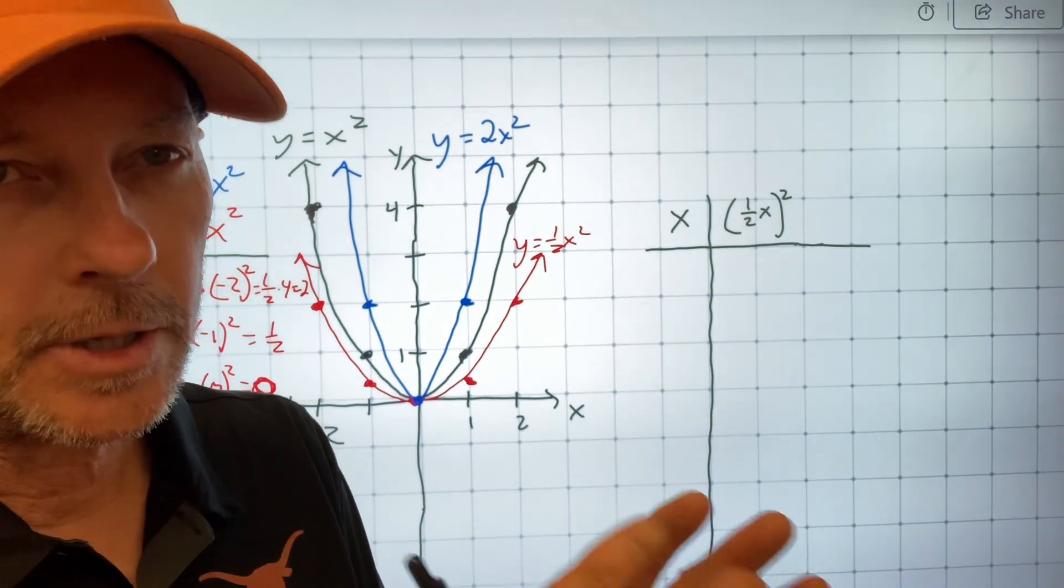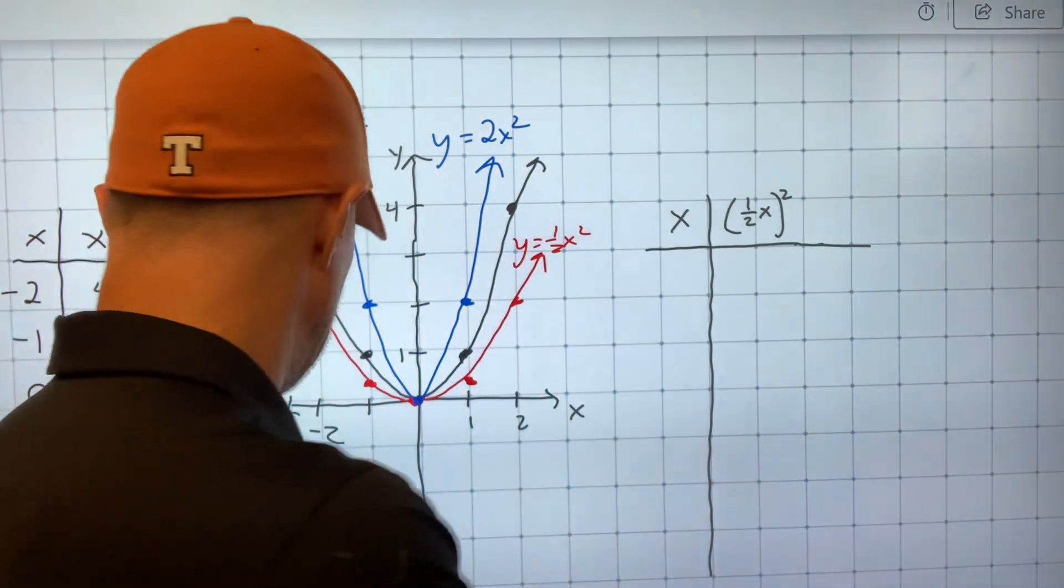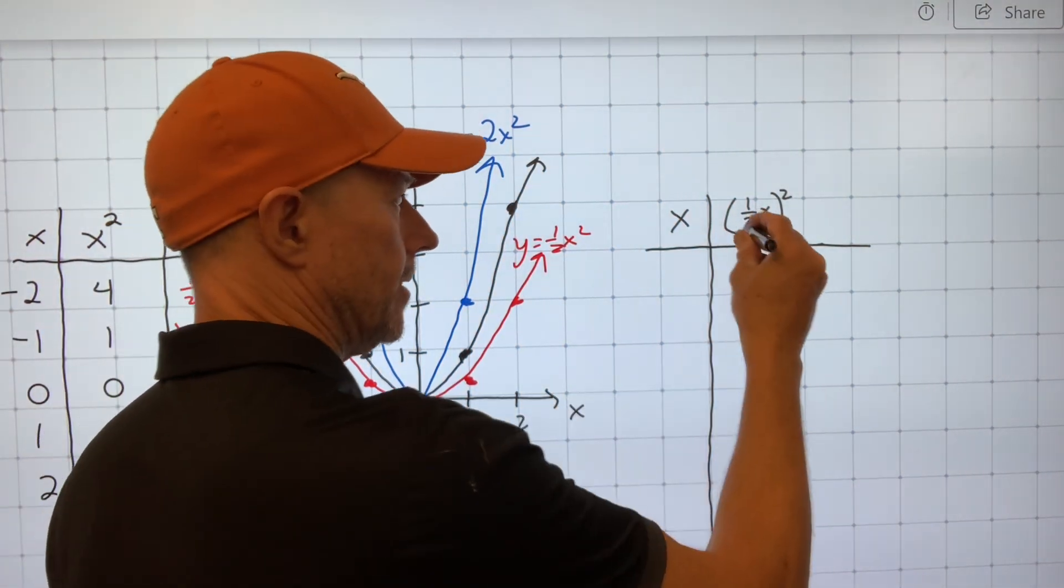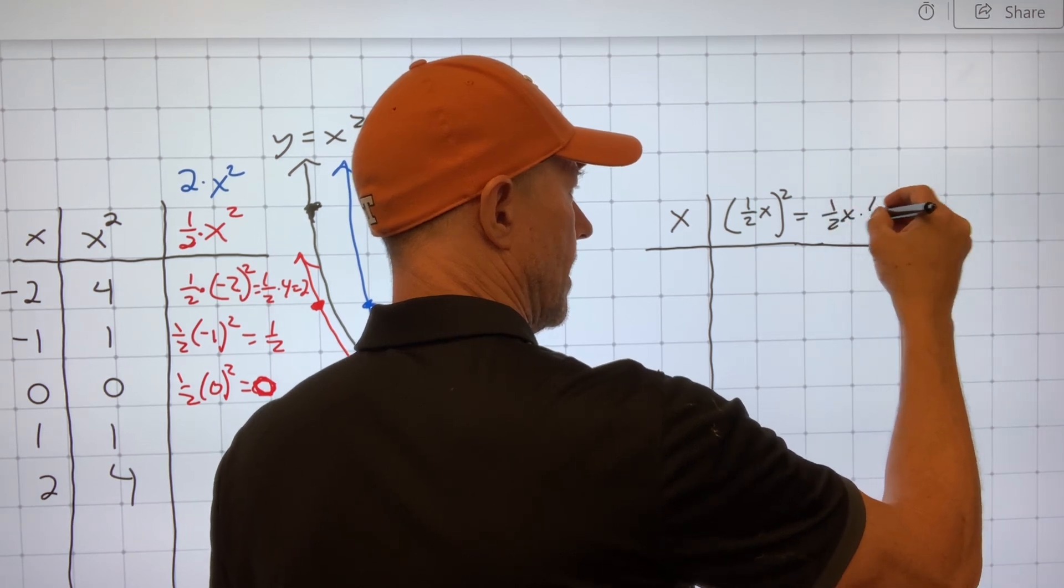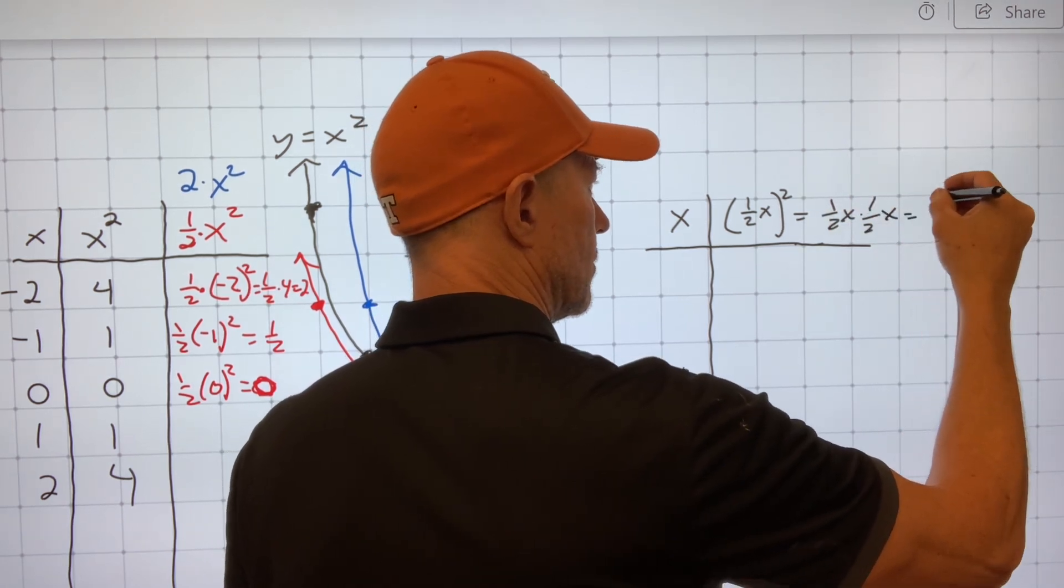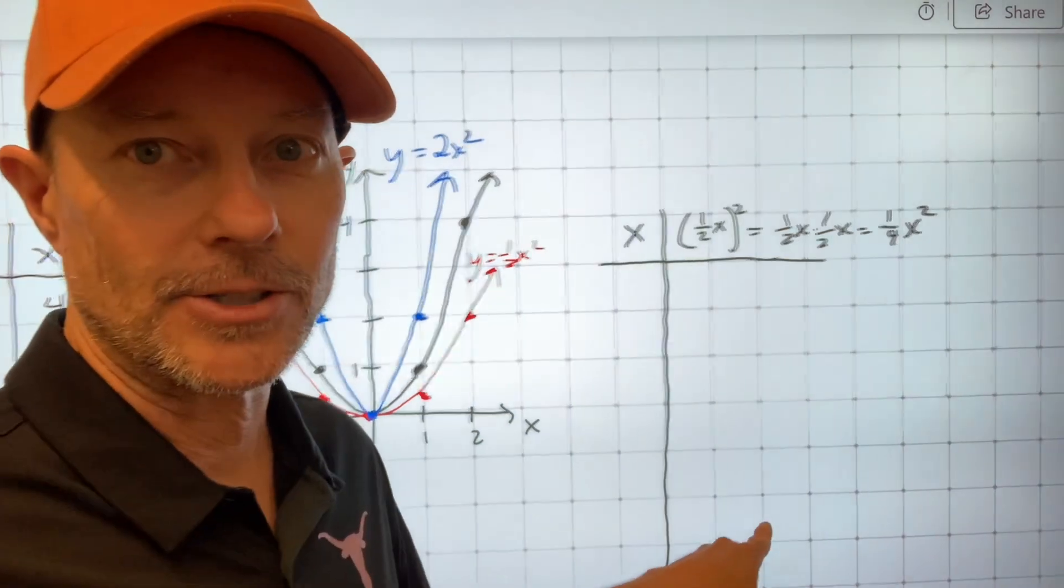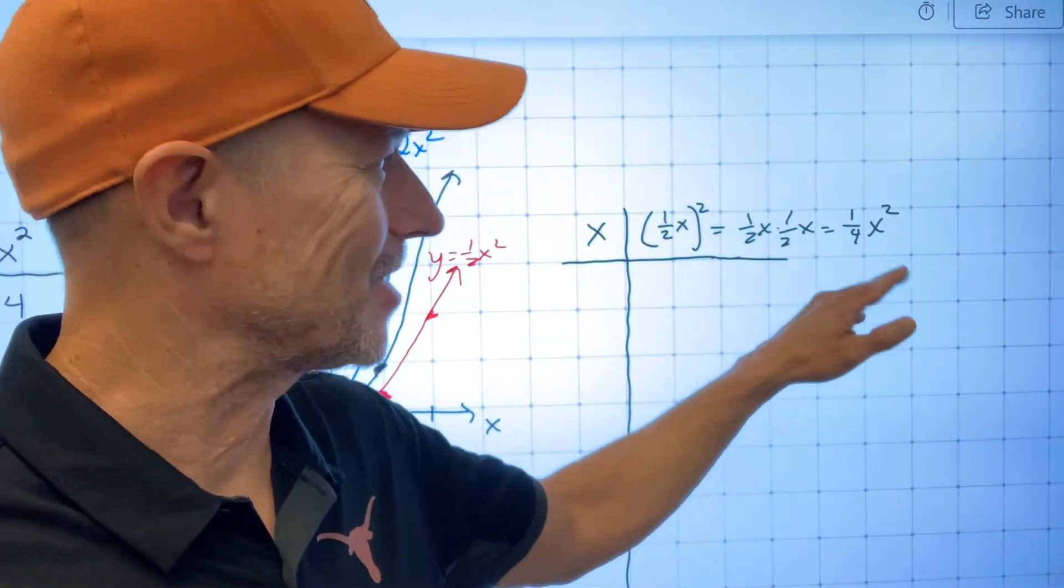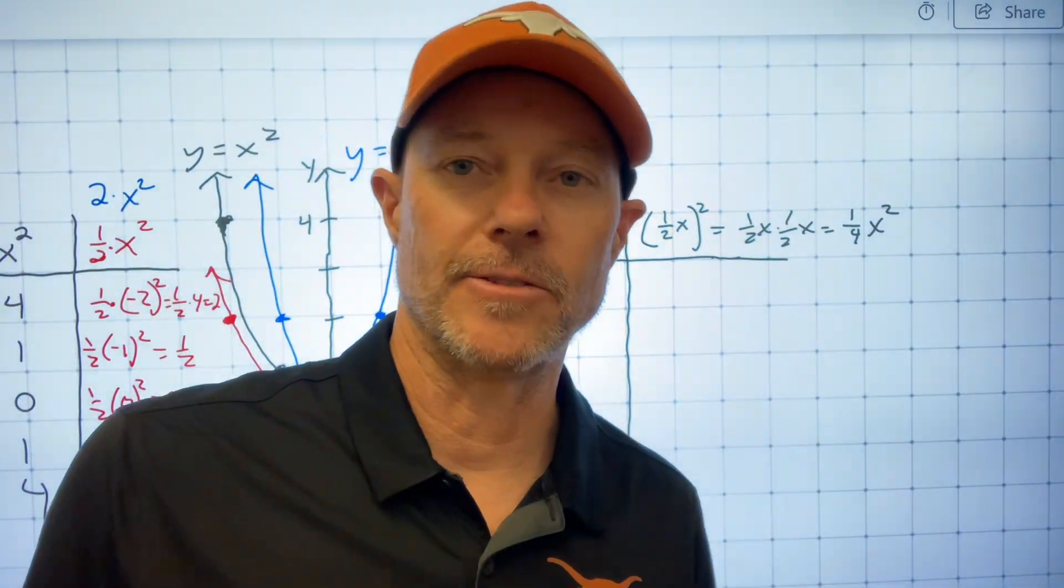But really, this is just a vertical stretch, because I can treat this this way. This is 1 half x times 1 half x, which is 1 fourth x squared. So it's still a vertical compression, but this time by a factor of 1 fourth, instead of a factor of a half.